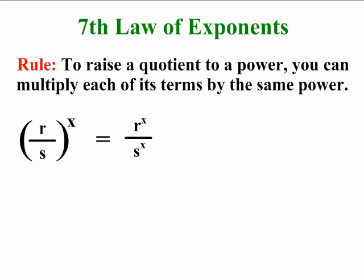The seventh law of exponents has the rule to raise a quotient to a power, you can multiply each of its terms by the same power. Here is an example. We have the quotient r divided by s, and the whole thing is being brought to the power of x.